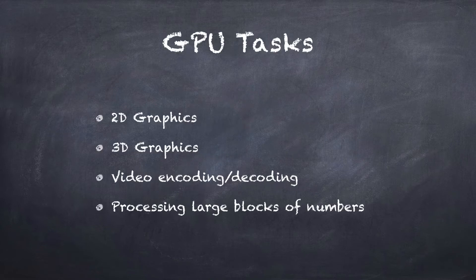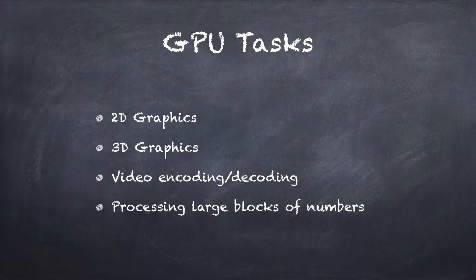The GPU is used for a lot of different things. Of course it's used to run the display you're seeing, so a more powerful GPU can handle more screens or higher-density screens. It handles 2D graphics — which includes drawing the screen whether you're using a word processor or just moving files around — as well as 3D graphics used in games and some regular apps. It's also used for encoding and decoding video, so if you're processing video in iMovie or Final Cut, or even just viewing video, you're using the GPU.